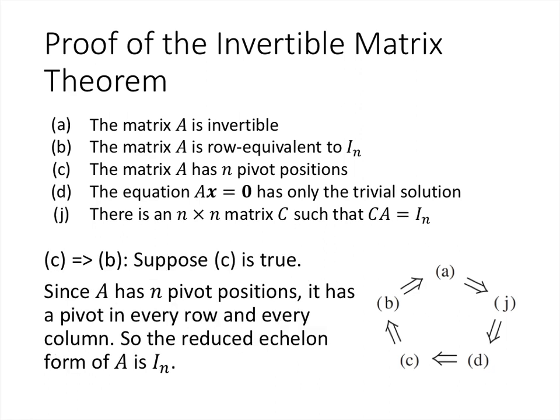For C implies B, we suppose C is true, so the matrix has n pivot positions. Since the matrix is n by n, that means there's a pivot in every row and therefore a pivot in every column. Since there's a pivot in every row and every column, when we row reduce to reduced row echelon form, that looks exactly like the identity matrix — and that's what B says.